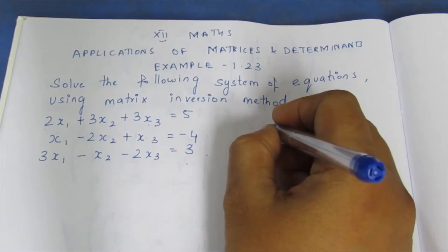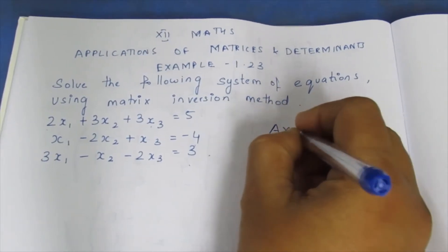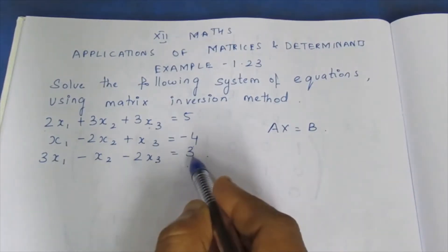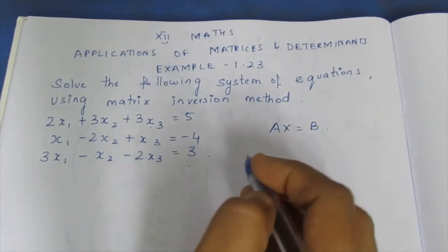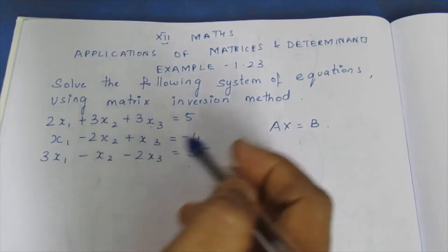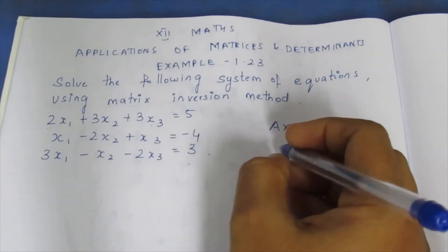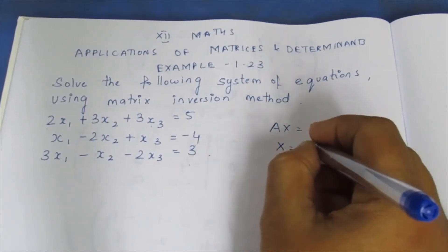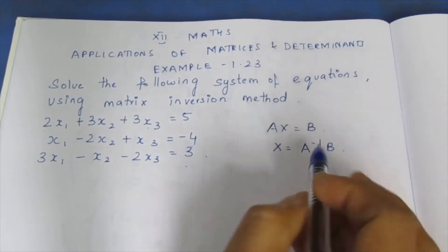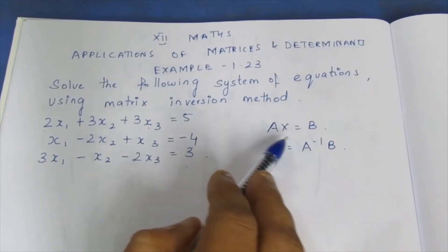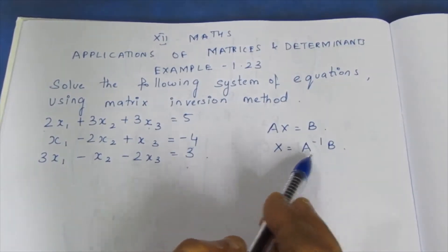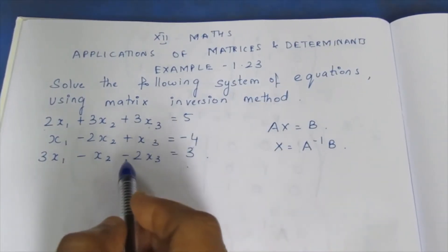Using the matrix inversion method, we write A·X = B. The solution is X = A⁻¹·B. Here A⁻¹ is the inverse of matrix A.